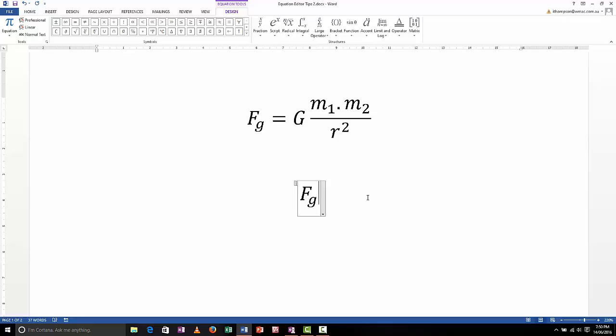Let's keep going. F sub G equals, I want a capital G. Now this can be a bit tricky, let me just type this intuitively and I'll show you what goes wrong and then I'll show you how to fix it. If I wanted to type G and then I wanted M1 M2 divided by R squared, let's just go M underscore one. Spacebar gives me my M sub one. Dot multiplication, M underscore two, so far so good.